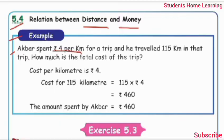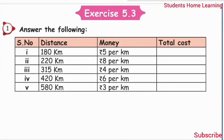Akbar spent 4 rupees for 1 km and travelled 115 km. Cost per km is Rs. 4. Cost of 115 km is equal to 115 multiply by 4. 4 times 5 is 20, write 0, carry 2. 4 times 1 is 4, plus 2 is 6. 4 times 1 is 4. The amount spent by Akbar is equal to Rs. 460.